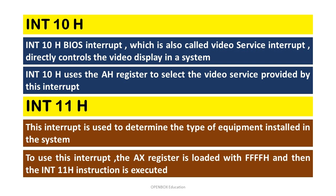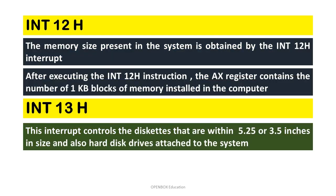Interrupt type 11h: This interrupt is used to determine the type of equipment installed in the system. To use this interrupt, the AX register is loaded with FFFFh and then the INT 11h instruction is executed.